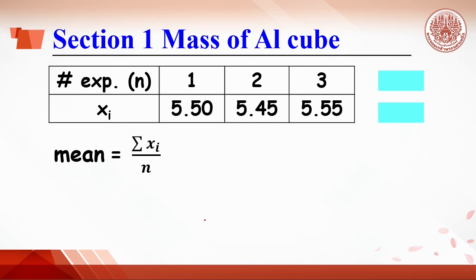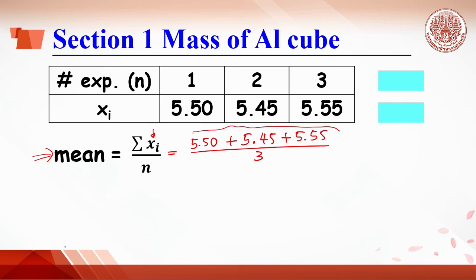What is the significant figure for the average weight of the cube? Using the equation with three trials: 5.50 plus 5.45 plus 5.55 divided by 3. The numerator is addition of significant figures, giving two decimal places, which equals 16.50. Divided by 3, where 3 comes from counting, not measuring, so significant figure rules are not applied to it. The average weight is reported as 5.50 with two decimal places.